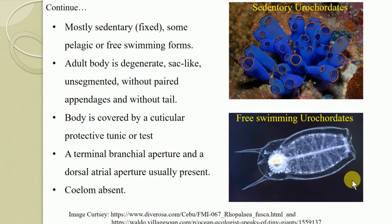They are variable in shape. The adult body is a degenerated, sack-like, unsegmented structure without paired appendages and without a tail. The body is always covered by a cuticular protective tunic, also known as the test. This tunic is composed of tunicin, a material similar to cellulose. Hence they are commonly known as tunicates or Tunicata.